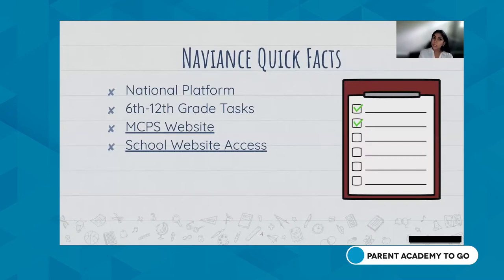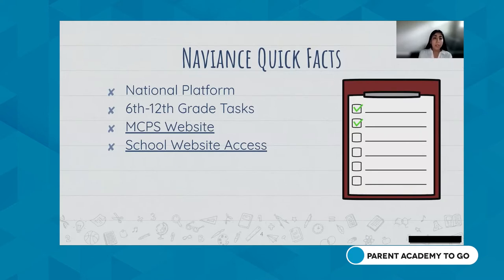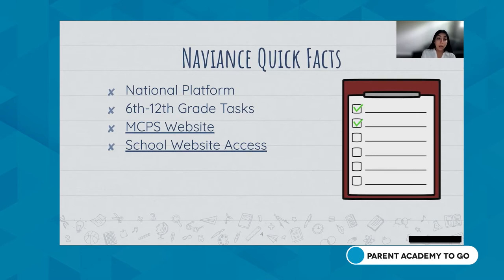Naviance is a national platform utilized across all states in the United States. There are very few counties that do not utilize Naviance, though they may use a different platform for supports to narrow down college and career searches after high school. This platform is a post-secondary planning platform used nationwide. I came from Northern Virginia's public school system and we utilized it there as well.